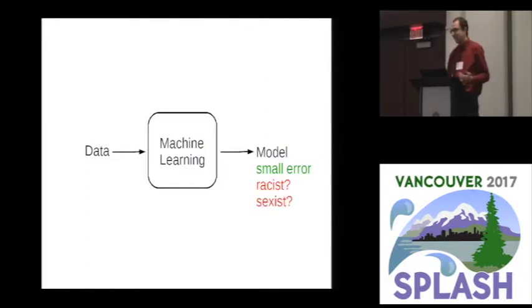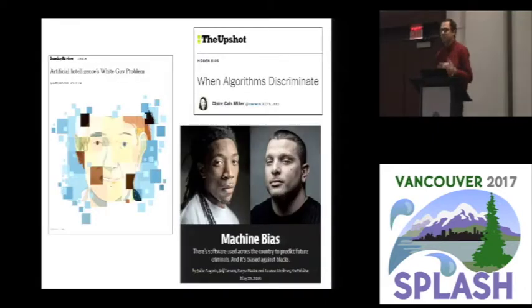But the way that society is interacting with technology is now where we have these automated decision-making processes, which sometimes come from machine learning, that make decisions about people. If I'm making decisions about people in some kind of systematic algorithmic way, I might care about more than just some sort of training set accuracy. I might start to be concerned, is it possible that my program is capable of discriminating in some sense?